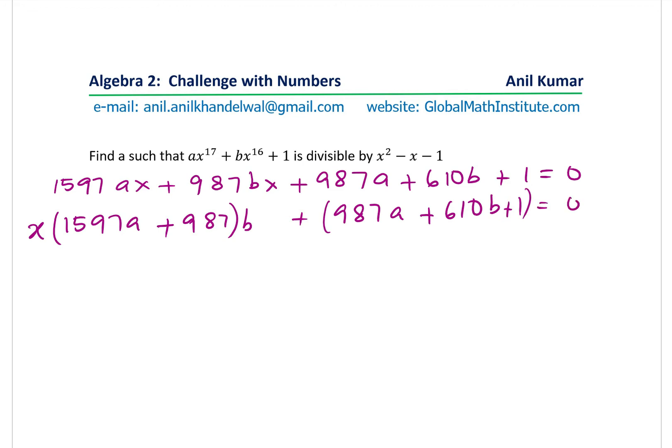Now if that is 0, then we have a constant term. So we get two linear terms and these three are the constant term. From here, we can take x common and you get 1597a plus 987b. And as far as the constant terms are concerned, which is 987a plus 610b plus 1 equals to 0. Now if that is 0, then we actually get two conditions from here. And the conditions are that 1597a plus 987b should be equal to 0. And also this term 987a plus 610b plus 1 should be equal to 0.